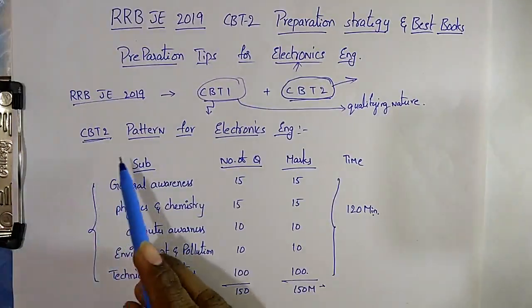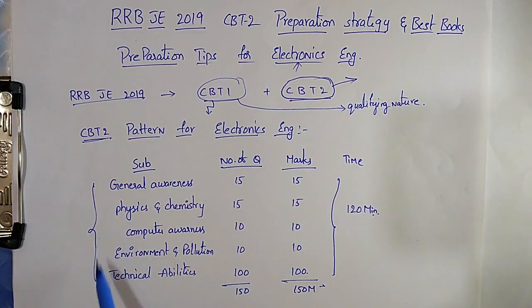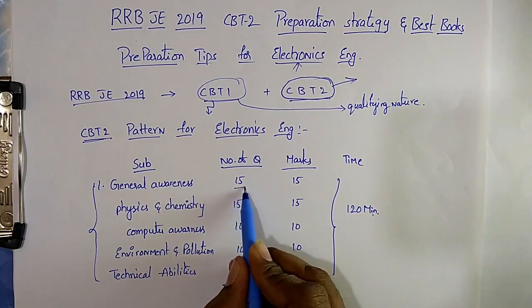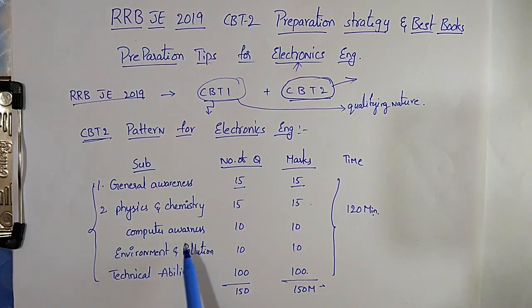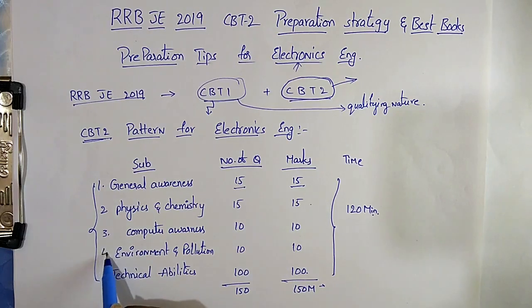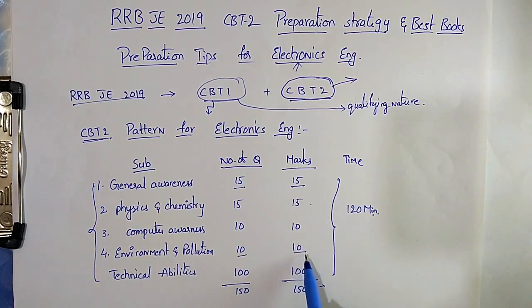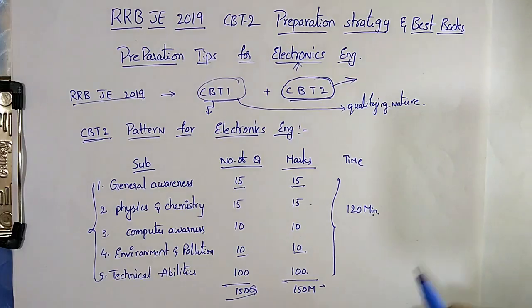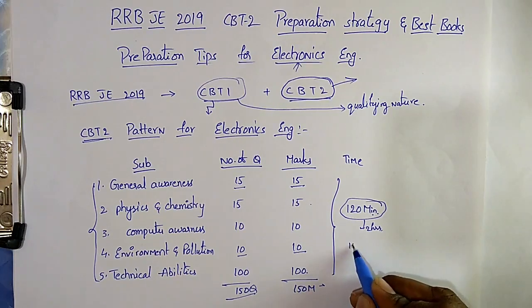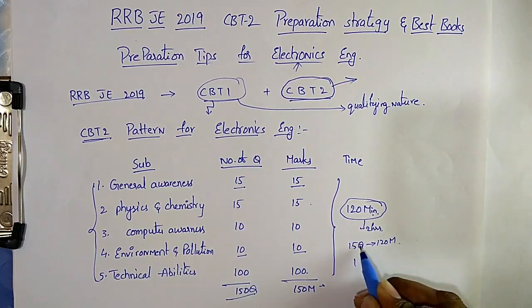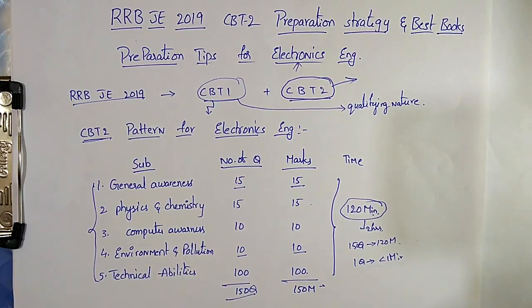Coming to the CBT-2 pattern for electronics engineering — there are total five sections. First, general awareness: 15 questions, 15 marks. Second, physics and chemistry: 15 questions, 15 marks. Third, computer awareness: 10 questions, 10 marks. Fourth, environmental and pollution control: 10 questions, 10 marks — this is a new subject. Fifth, technical abilities: 100 questions, 100 marks. Total 150 questions, 150 marks. Time given is 120 minutes, that is two hours. So for 150 questions we have 120 minutes — less than one minute per question. Time management is very important for CBT-2.